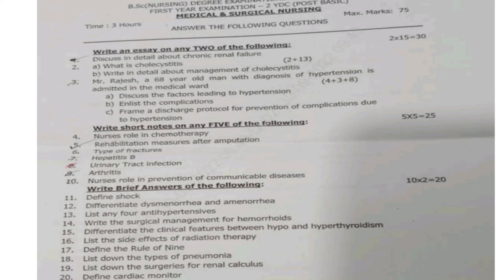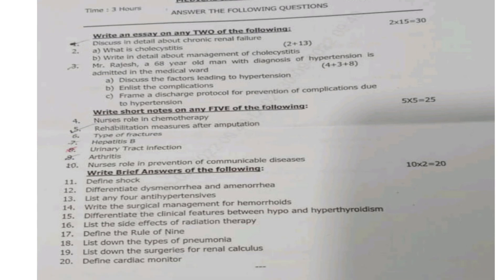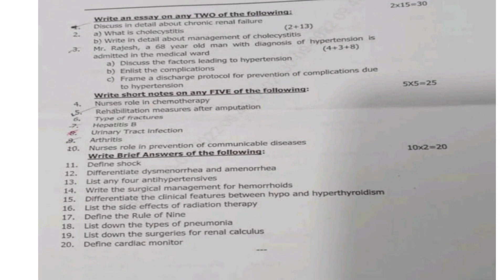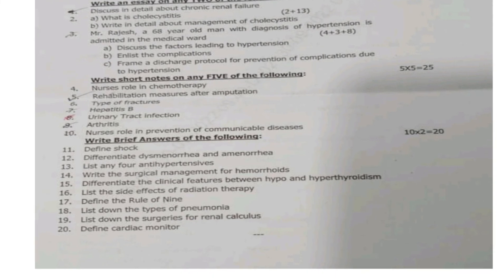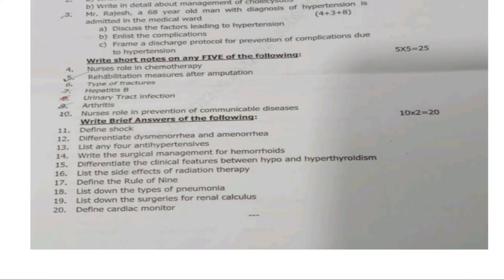Short notes — write short notes on any five: 4th — nurse's role in chemotherapy; 5th — rehabilitation measures after amputation; 6th — types of fractures; 7th — hepatitis B; 8th — urinary tract infection; 9th — arthritis; 10th — nurse's role in prevention of communicable diseases. Out of seven, answer any five, 5 × 5 = 25 marks. Brief answers: 11th — define shock; 12th — differentiate dysmenorrhea and amenorrhea.